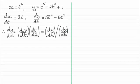And so if we use this rule, then dy by dx will be dy by dt divided by dx by dt. And that gives us 5t to the power 4 minus 6t squared all over 2t.